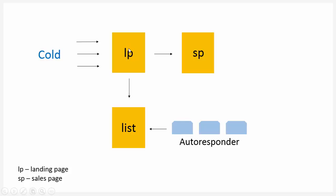So what happens to all of the people that didn't opt into the list? On the next slide I'm going to show you how we actually warm up the audience before they see the landing page. Traditionally — or the older way — you'd send cold traffic directly to a landing page. Instead, we're going to send cold traffic to a content page, like a blog post or article, to warm up that audience, position ourselves as an authority, and introduce ourselves first before sending them to the landing page.